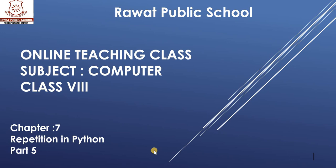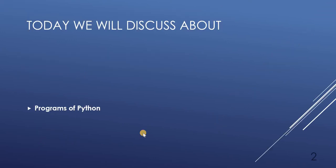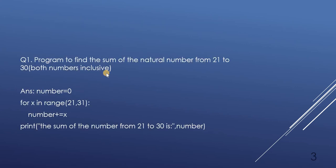So today in this chapter we are going to discuss about some programs of Python which are also your question answers in your book. We have to create programs for natural numbers from 21 to 30.